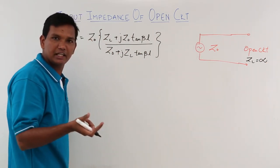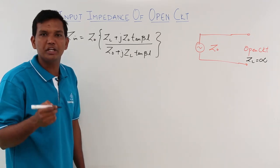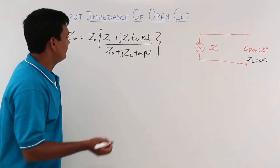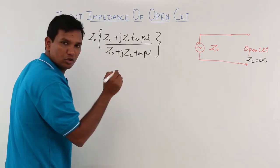For an open circuit, none of the current can flow. If none of the current can flow, it means what? That impedance is infinite. So my Z L is infinite. How can I solve this?